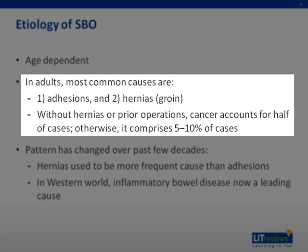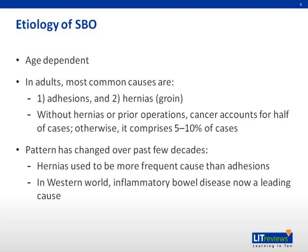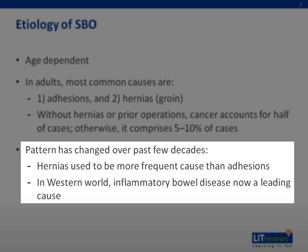In adults without hernias or prior operations, cancer accounts for half of small bowel obstruction cases; otherwise it comprises 5 to 10%. The pattern of small bowel obstruction has changed over the past few decades. Cases attributed to hernias have declined from roughly 40% in the 1960s to 15% in contemporary series, presumably due to an increased rate of elective hernia repair.